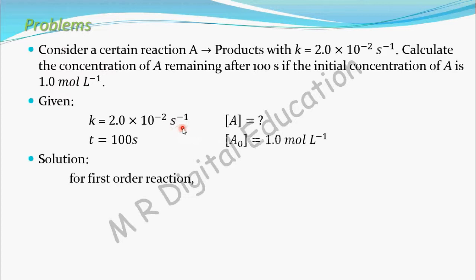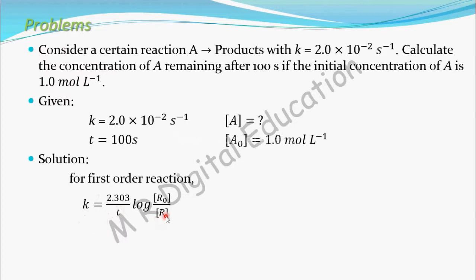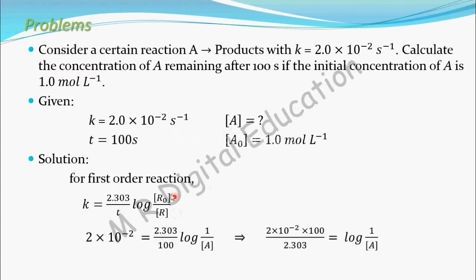For a first order reaction, K equals 2.303 divided by time, into log of A₀ by A. Here we know the initial concentration A₀, we know the time, and we know the value of K. Now we have to find the concentration of A.